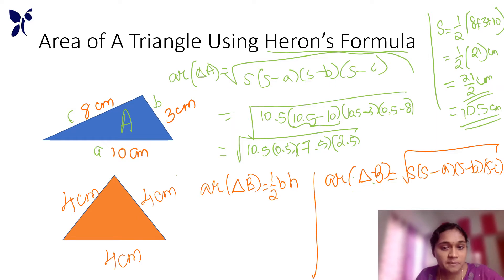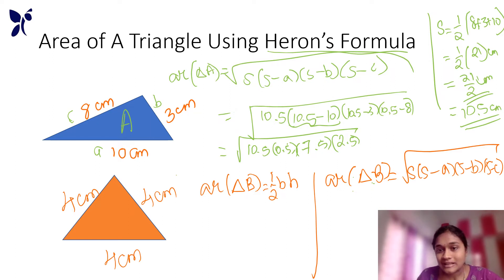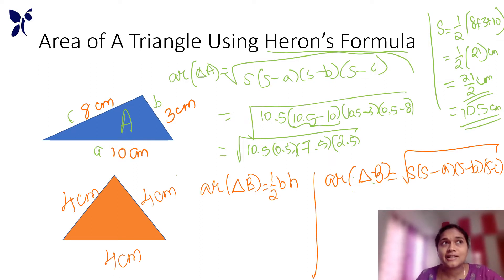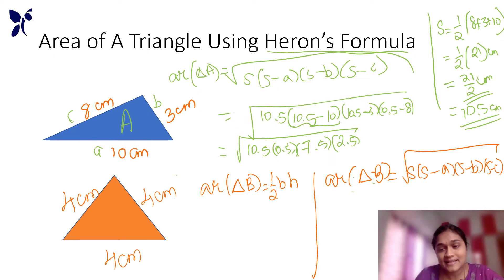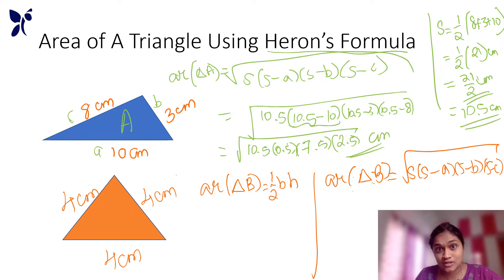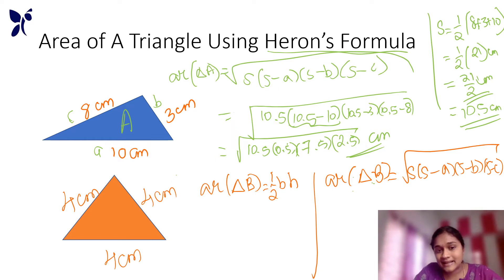Now let's multiply under the root. You can use whole numbers and decimals. For example, root of 5 into 10 into 2 — it will be easy to get the root. This is the area using Heron's formula for this triangle.